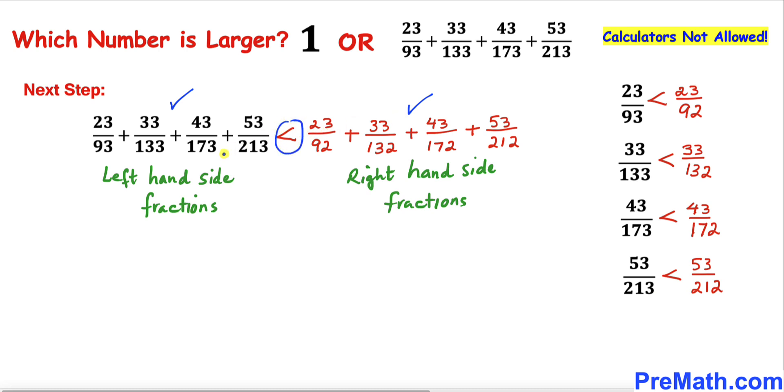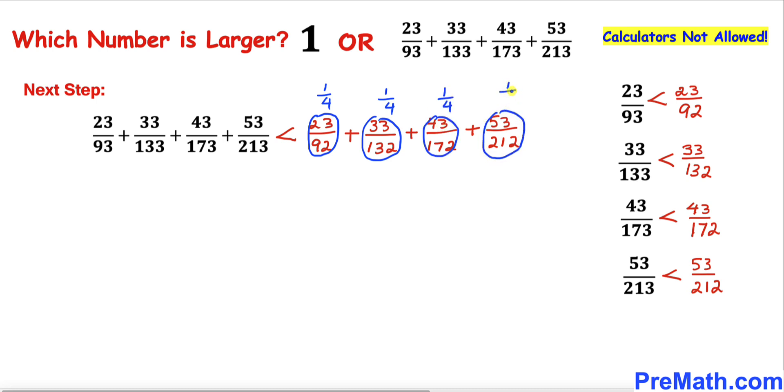Likewise, this fraction reduces to 1/4 as well, and finally this reduces to 1/4 as well. These four quarters add up to 1. Therefore, the left-hand side is smaller than 1.